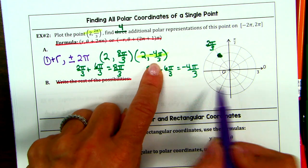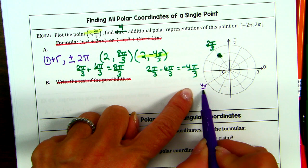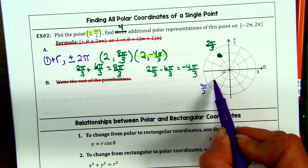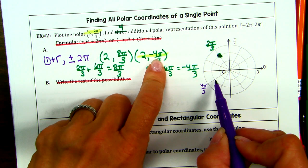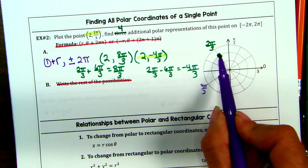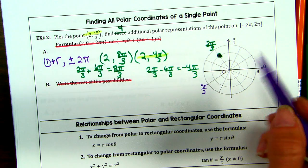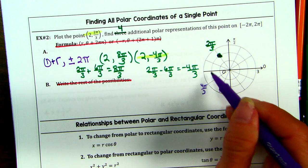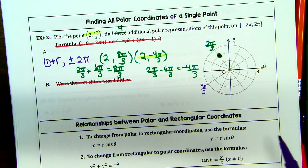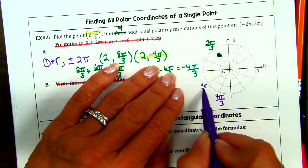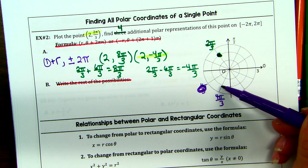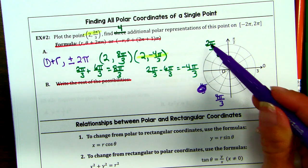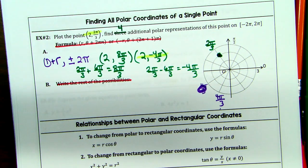Let me show you why these are the same. I would go to positive 4 pi over 3 — that's right here. Where is negative 4 pi over 3? Cross the x-axis — right here. So this is in the same place as that. Go to 4 pi over 3, cross the x-axis — it ends up in the same place. Same denominator, but in the quadrant above the x-axis.